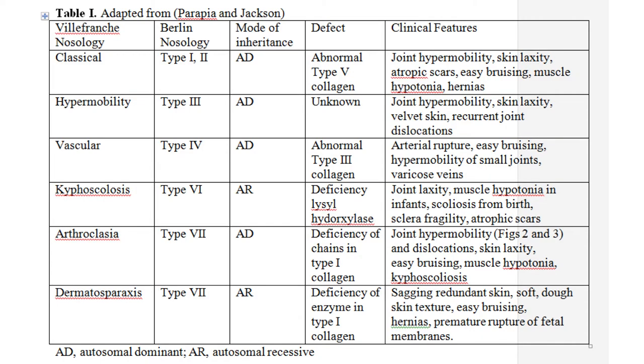If you look at the nosology from 1986, you will see the different types: one, two, three, five. I get asked all the time about type three. Hypermobility, for example, is type three in the 1986 criteria, but in the 1997 criteria we talk about hypermobility. These terminologies, although old, you will still see them in clinical letters and lectures, and you will see the confusion about them. According to the 1997 criteria, we had six major subtypes — they described other ones, but those only had one or two cases.